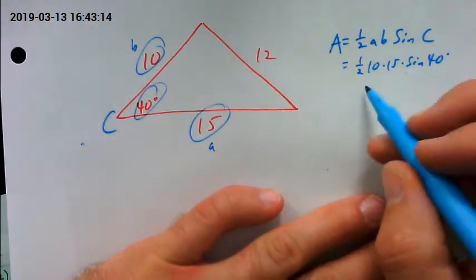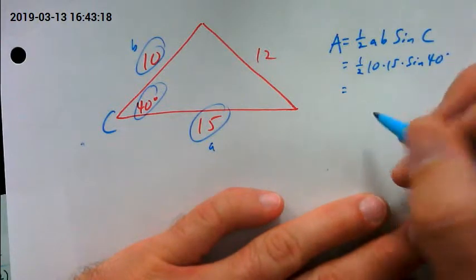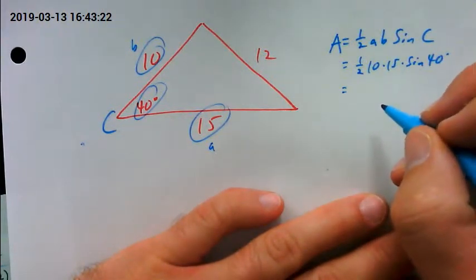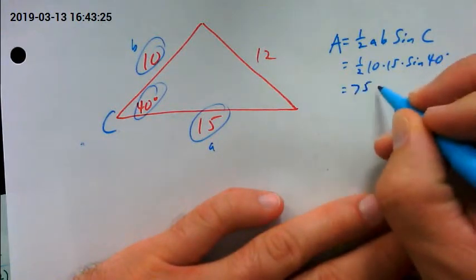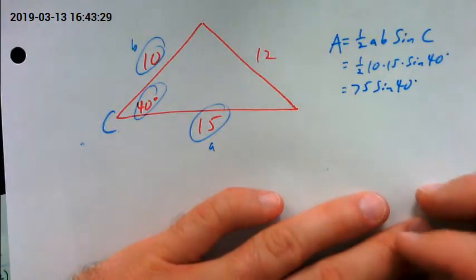So you'd have one half of 10 is 5. 5 times 15 is—what is that?—75? And then you'd have to plug that into your calculator. You couldn't do that without a calculator.